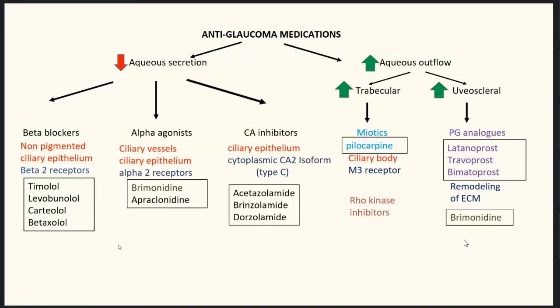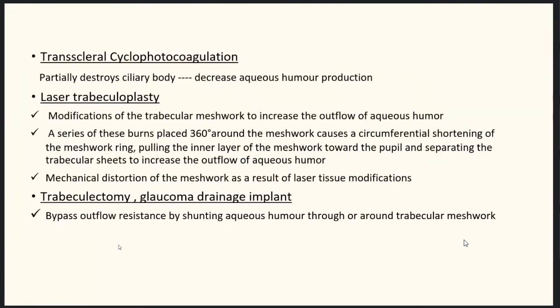Various surgeries and procedures affect aqueous humor production or outflow. Transscleral cyclophotocoagulation causes partial destruction of the ciliary body, decreasing aqueous production. Laser trabeculoplasty modifies the trabecular meshwork, increasing aqueous outflow. Trabeculectomy and glaucoma drainage implant surgery bypass outflow resistance by shunting aqueous through and around the trabecular meshwork.